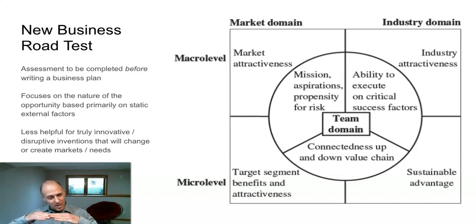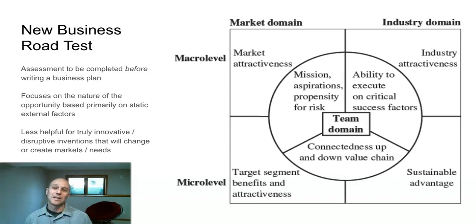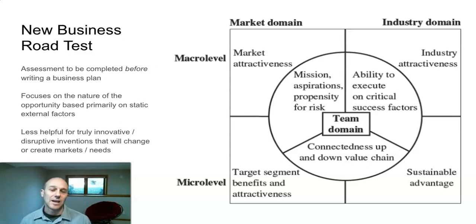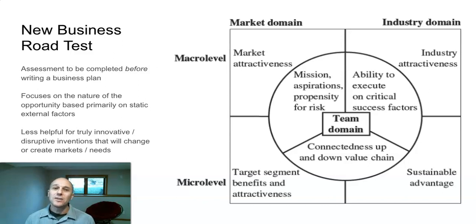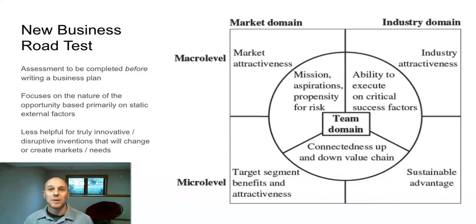The micro level is sort of the very specific ground level; the macro level is way up at the top — the high level. We can think about it from the market and from the industry perspective, and we covered those in our last conversation. What we're trying to do is think specifically about the external factors that determine whether this is an interesting or attractive opportunity.